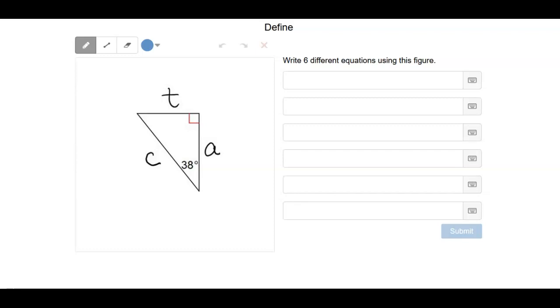Write six different equations using this figure. There are a lot of different things that we can write here. For example, if this is the angle that we're working with, we'll call this theta down here. This would be the opposite, this would be the adjacent, and this would be the hypotenuse.